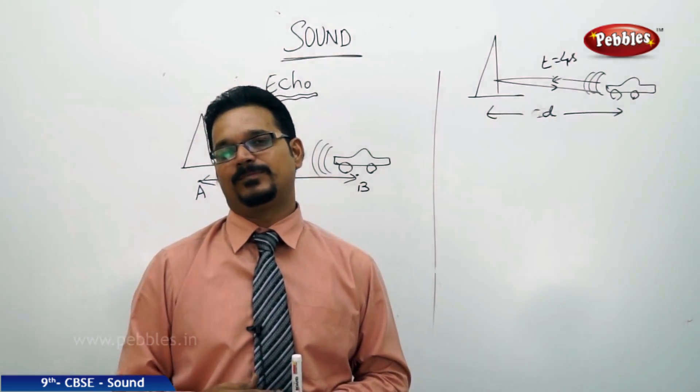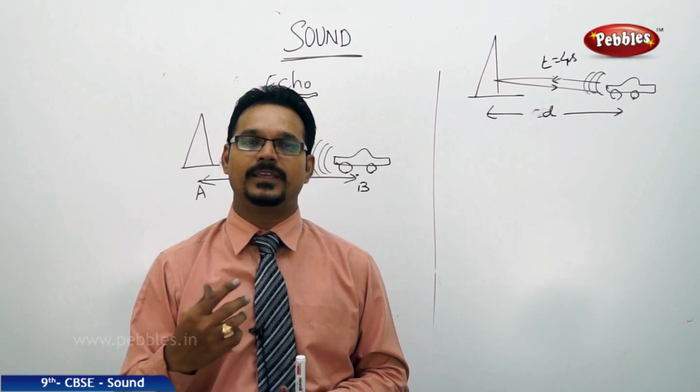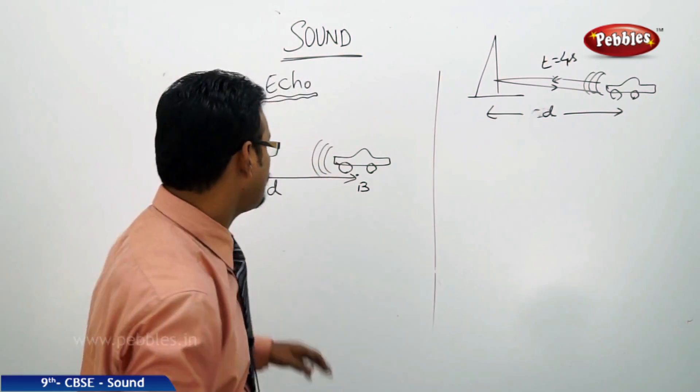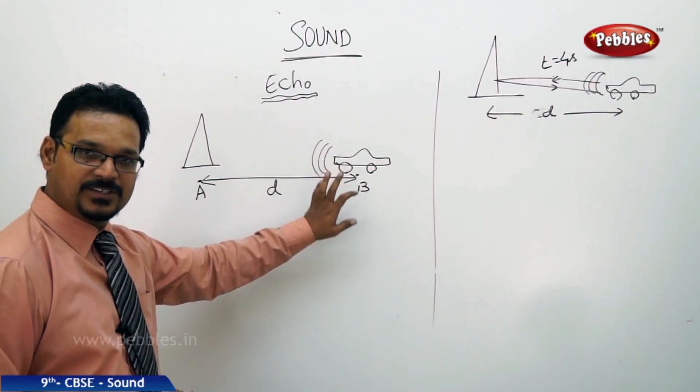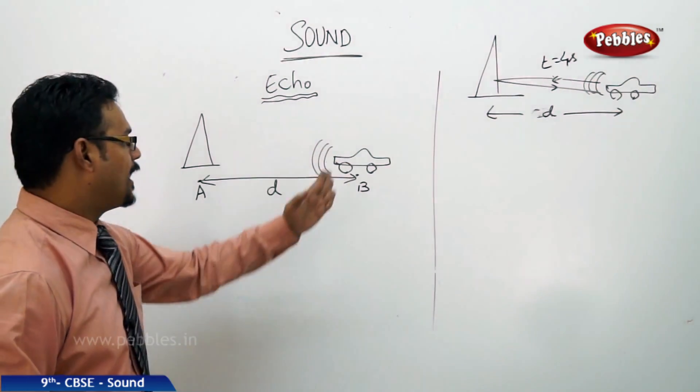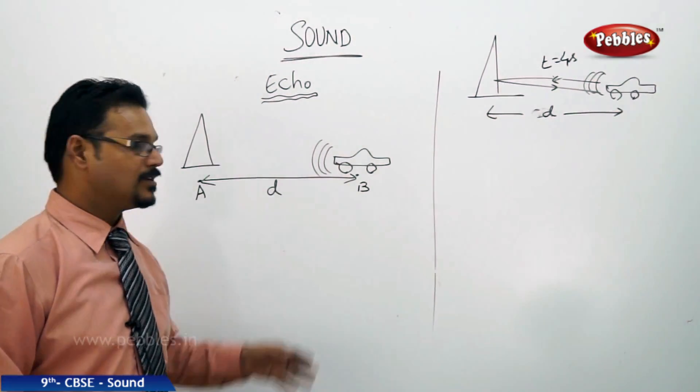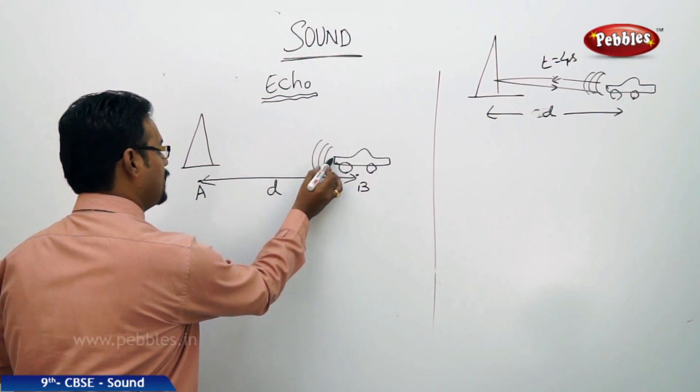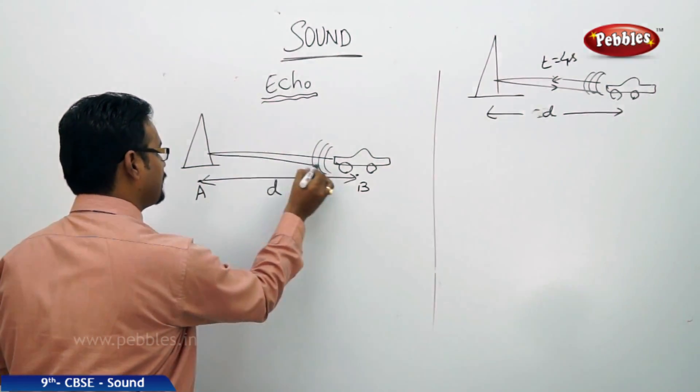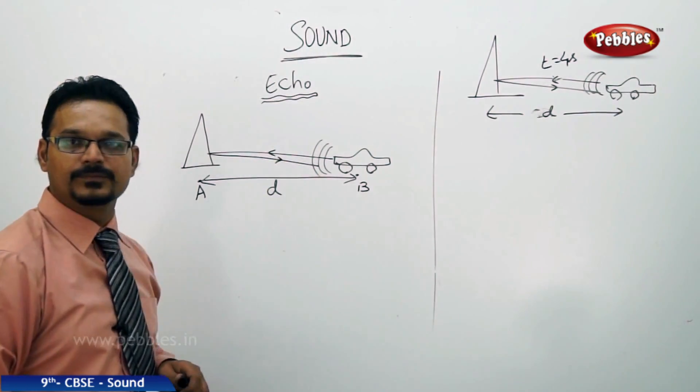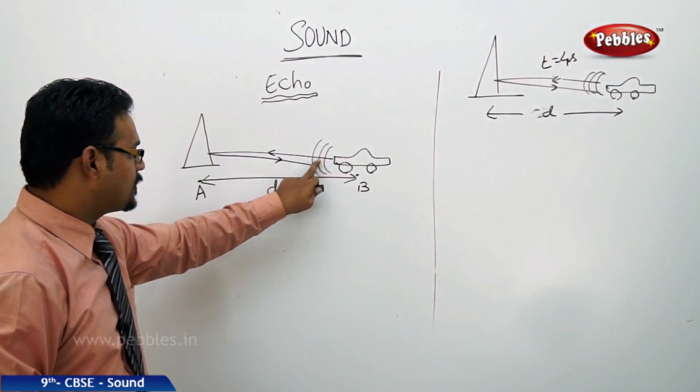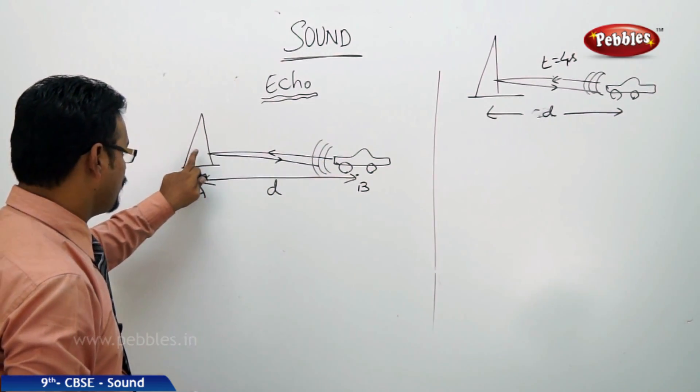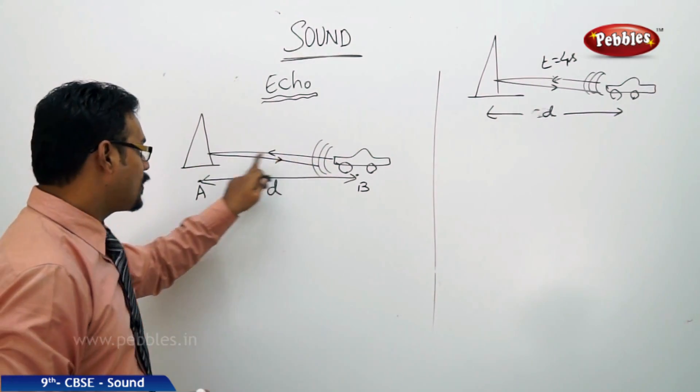Let me explain. See the example here: there is a car and it is blowing the horn. That horn is nothing but sound. The sound travels towards the peak and reflects. When the car blows the horn, the sound goes towards the peak and reflects, so the total distance traveled is d plus d, which is 2d.